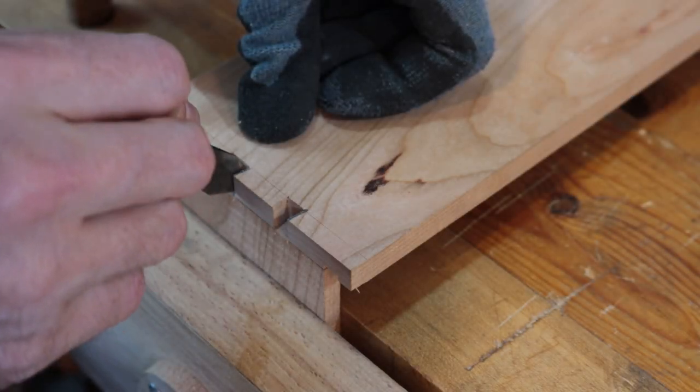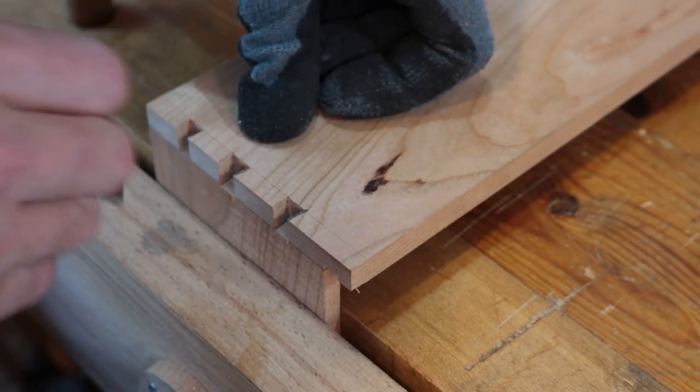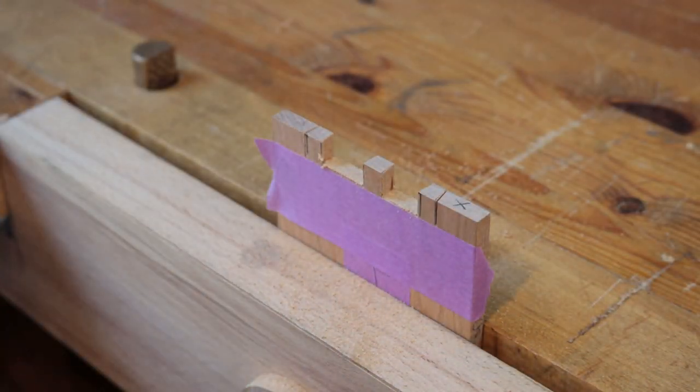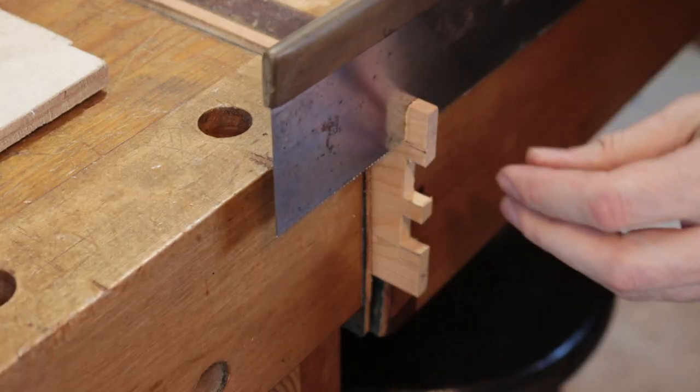Then I line up the tail board with the pin board and I mark out the pins. After I've done that it's just a matter of cutting out all the waste. There are different ways that you can cut out the waste if you want to chisel it out or cut it out with a coping saw. It all works. It's really up to you.